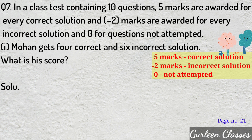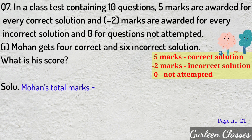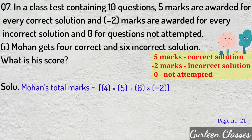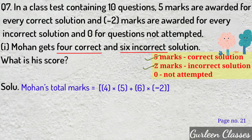Question number 7: In a class test of 10 questions, 5 marks for every correct solution, minus 2 marks for every incorrect solution, and 0 for not attempted. Part 1 — Mohan gets 4 correct and 6 incorrect. Total marks: 4 into 5 plus 6 into minus 2 equals 20 plus minus 12 equals 20 minus 12 equals 8.